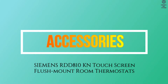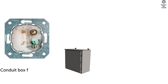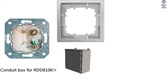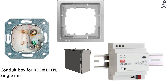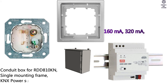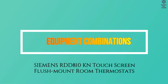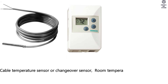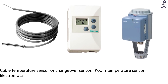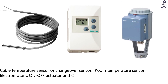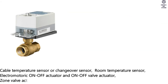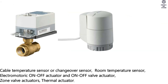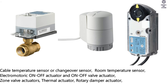Accessories: conduit box for RDD810KN, single mounting frame, KNX power supply 160 mA / 320 mA / 640 mA, equipment combinations, cable temperature sensor or changeover sensor, room temperature sensor, electromotoric on/off actuator and on/off valve actuator, zone valve actuators, thermal actuator, rotary damper actuator.